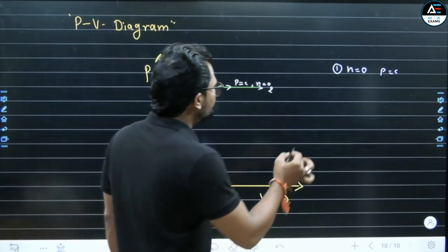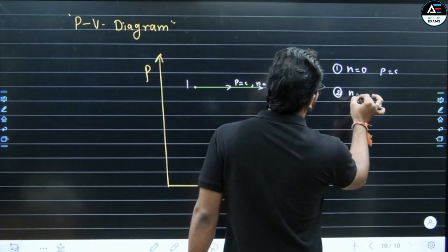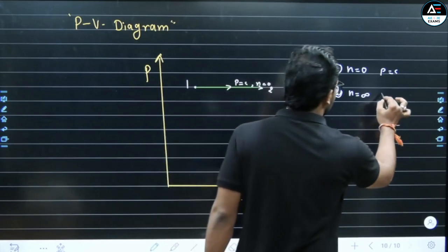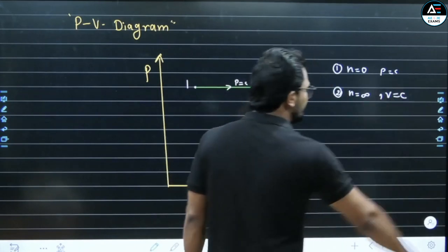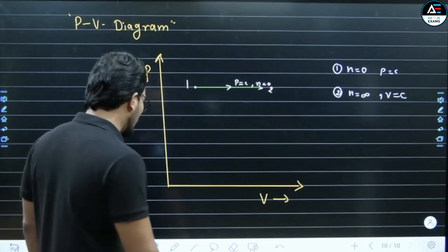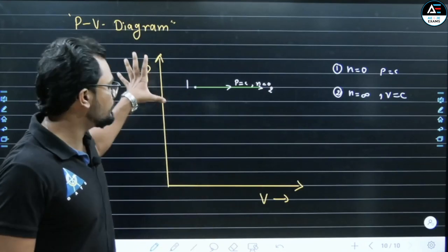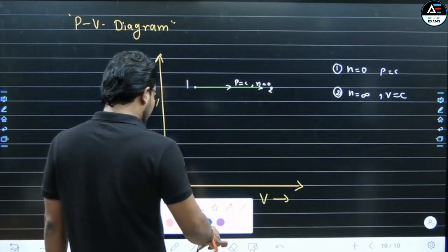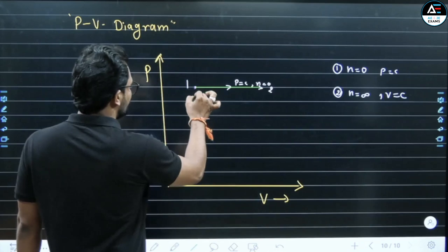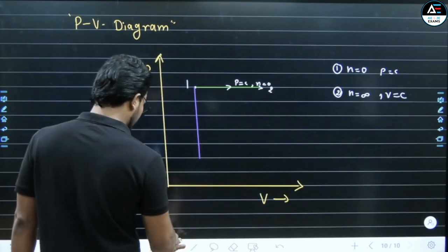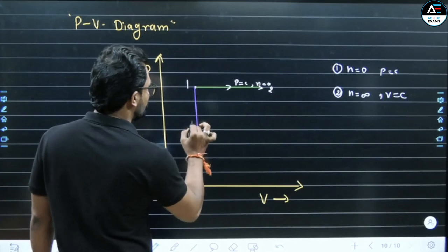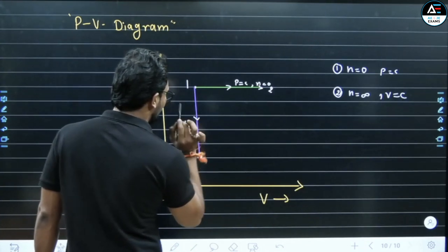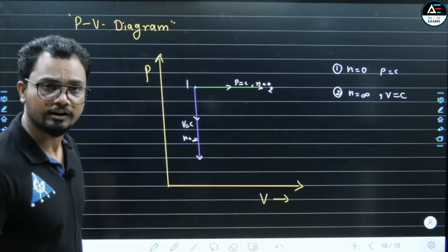Second, N = infinity gives V = constant — constant volume process. On the PV diagram, a constant volume line is a vertical line. So here we get a vertical line — that is the constant volume line, V = C, N = infinity. Clear?